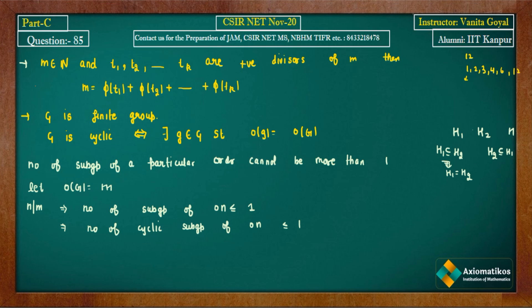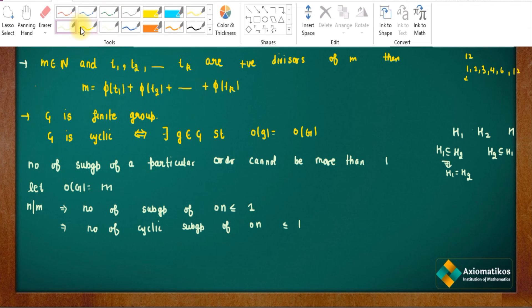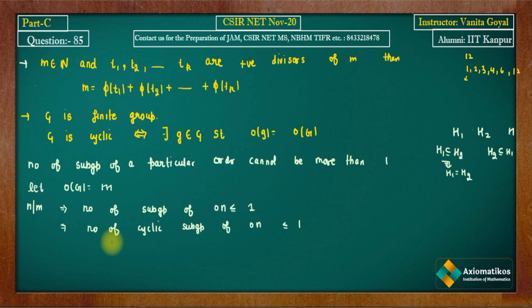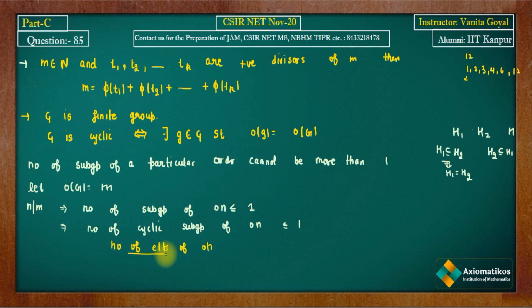The number of cyclic subgroups of order n in any group equals the number of elements of order n divided by φ(n), where φ is Euler's totient function. Since this number is ≤ 1, we get: number of elements of order n ≤ φ(n).